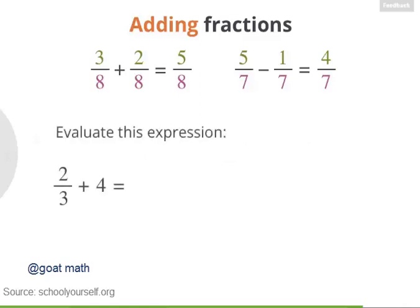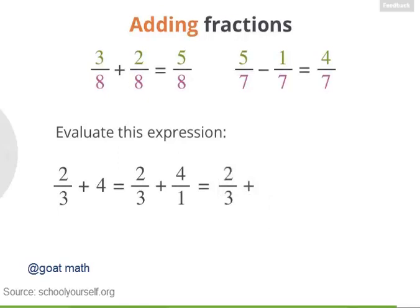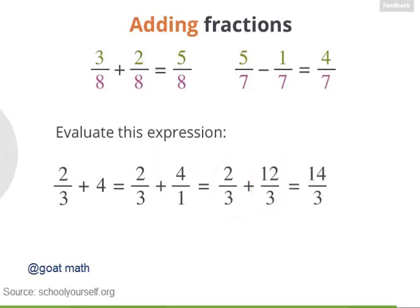Okay, try this one out. What's 2 thirds plus 4? So now we're adding a fraction and a whole number. Remember, whenever you see a whole number, you can think of it as that number divided by 1. So try rewriting these fractions so they have the same denominator and then find the sum. Precisely. You can rewrite 4 over 1 as 12 over 3. So 2 thirds plus 12 thirds equals 14 thirds. And that's our answer: 2 thirds plus 4 equals 14 thirds.